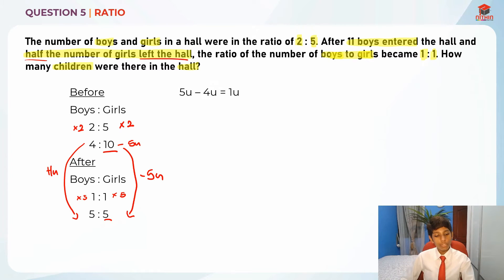So basically, 5 units minus 4 units is equal to 1 unit. So what do we understand by this? After 11 boys entered, so from 4 to 5 boys, 11 boys entered the hall. So from 4 units, the boys became 5 units. So 1 unit is actually 11 boys.